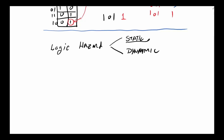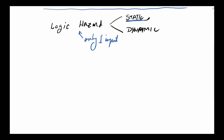Now let's look at a different kind of hazard — logic hazards. The big difference is that logic hazards are caused when only one input changes. Static is when the output stays the same but gets a small pulse. Dynamic is when we might get multiple pulses. Let's look at an example of a logic hazard.